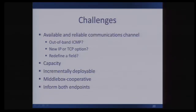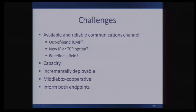It all feeds into the main challenge, which is an available and reliable communications channel. Say you're trying to communicate an integrity check between two TCP endpoints — you could use out-of-band ICMP, make a new IP or TCP option, or try to redefine a field out of the header. But the problem is that the very same paths that will most likely disrupt those methods are precisely the paths we're most interested in testing. If you create a new option to carry your integrity check, it could get stripped out by a middlebox. You need something capable of transiting all types of paths, while also having enough capacity, being incrementally deployable, and being middlebox-cooperative — so we don't disrupt well-behaved middleboxes.